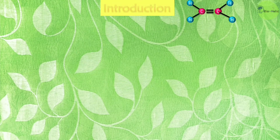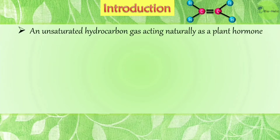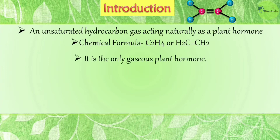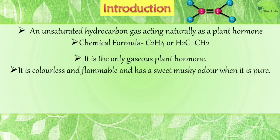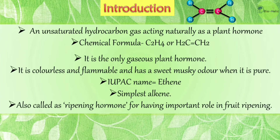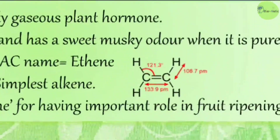Ethylene is an unsaturated hydrocarbon gas. The chemical formula of ethylene is C₂H₄, or H₂C=CH₂. As mentioned, it is the only gaseous plant hormone. It is colorless and flammable and has a sweet musky odor when pure. The IUPAC name of ethylene is ethene. It is the simplest alkene, and it is also called the ripening hormone because of its important functions in fruit ripening.